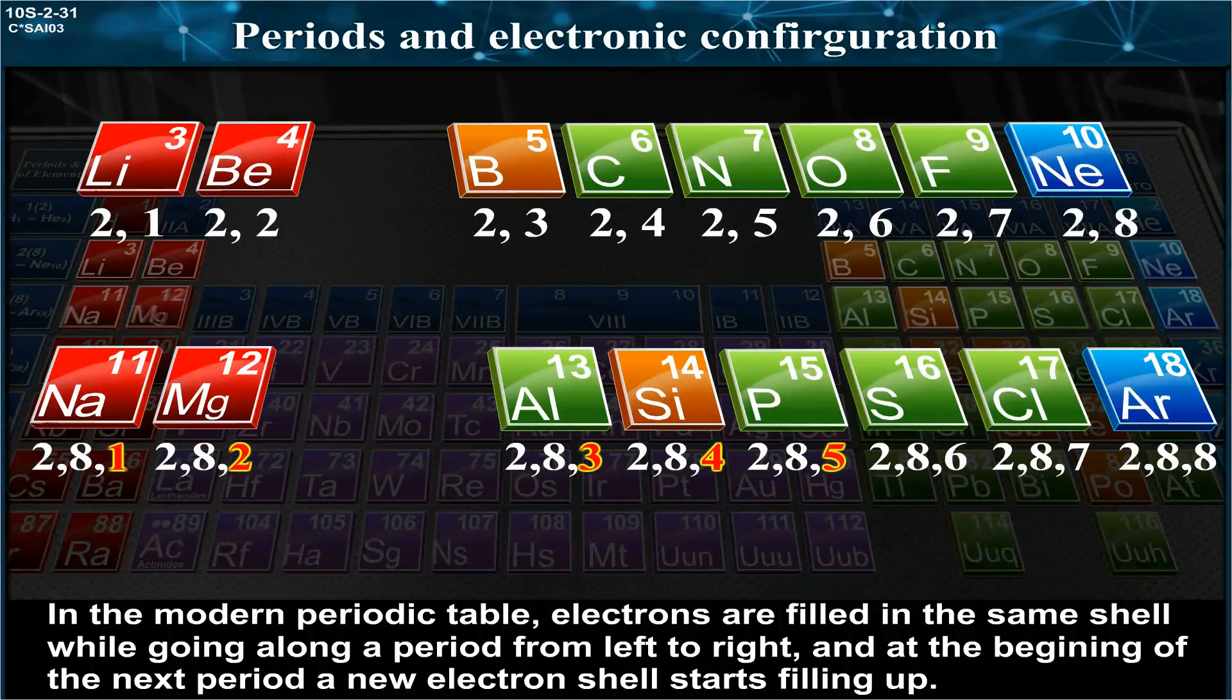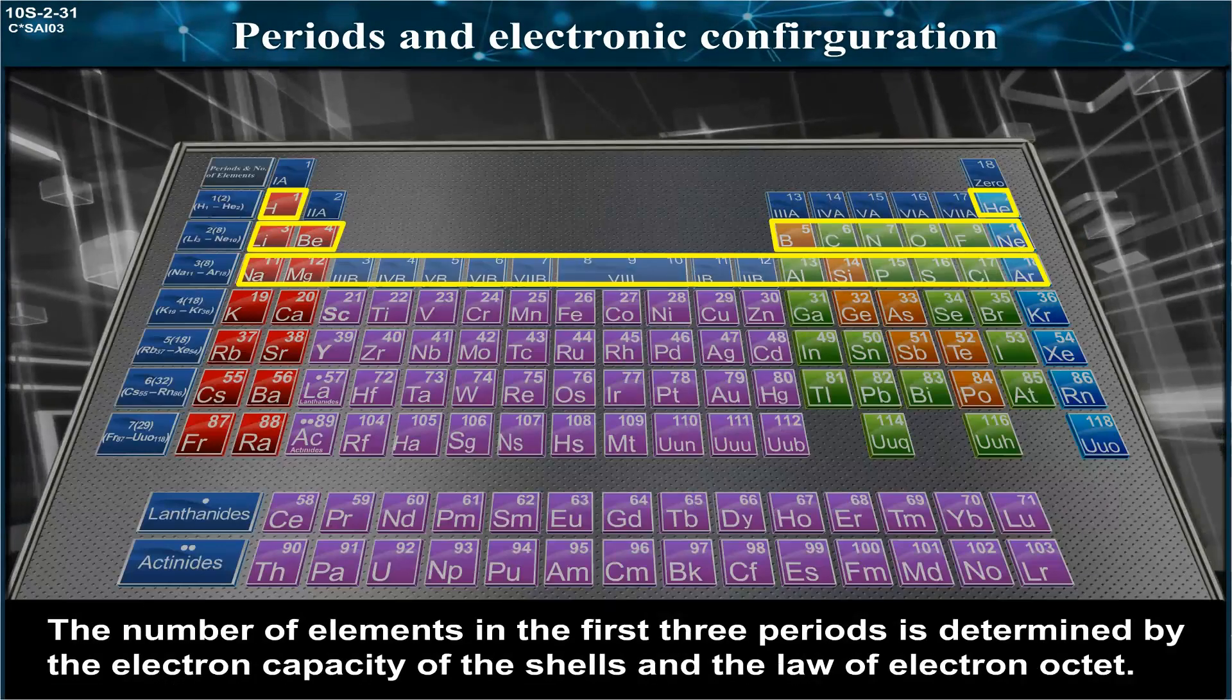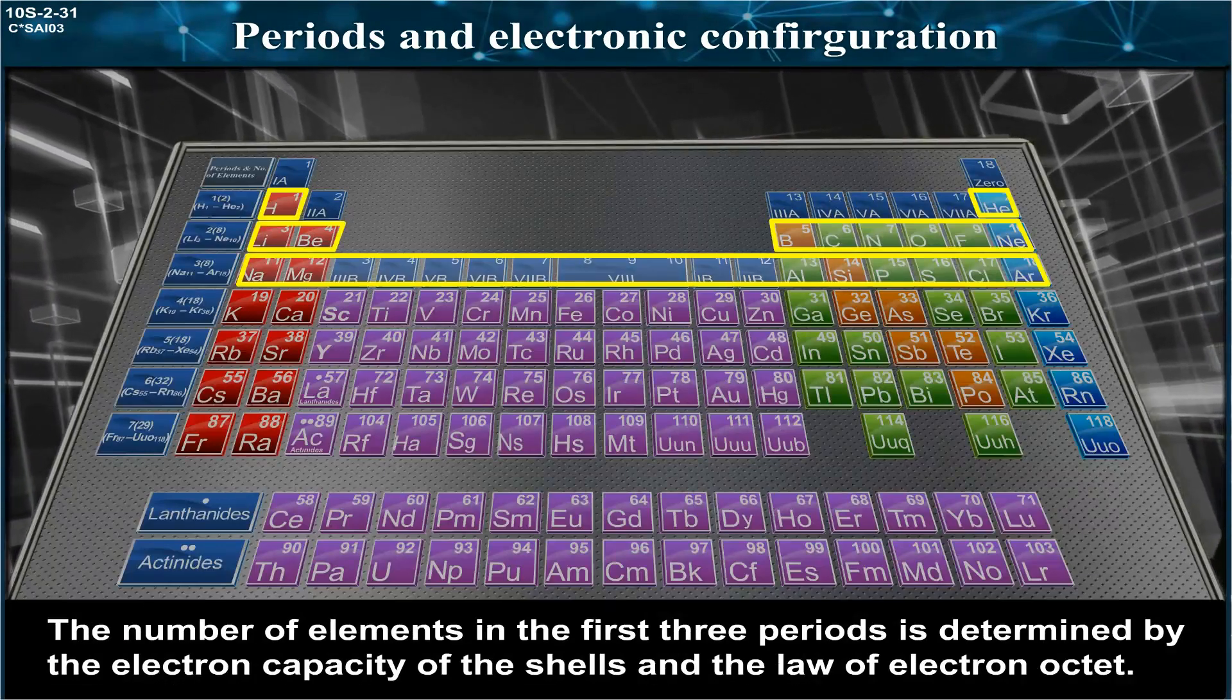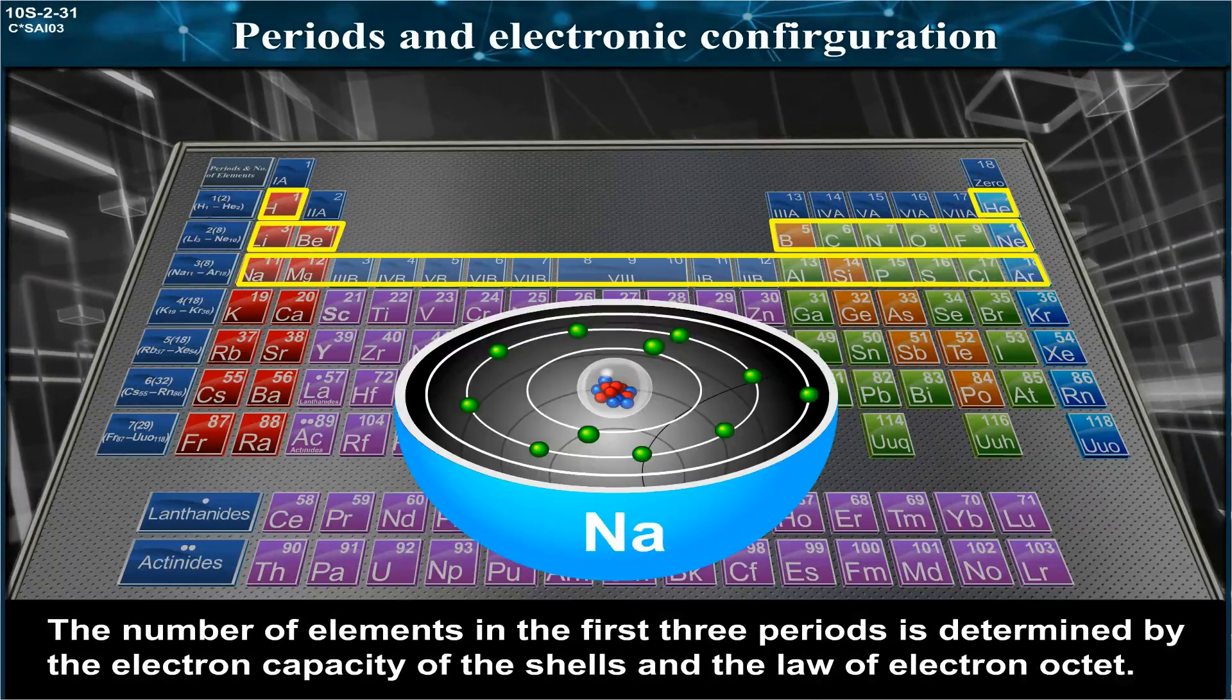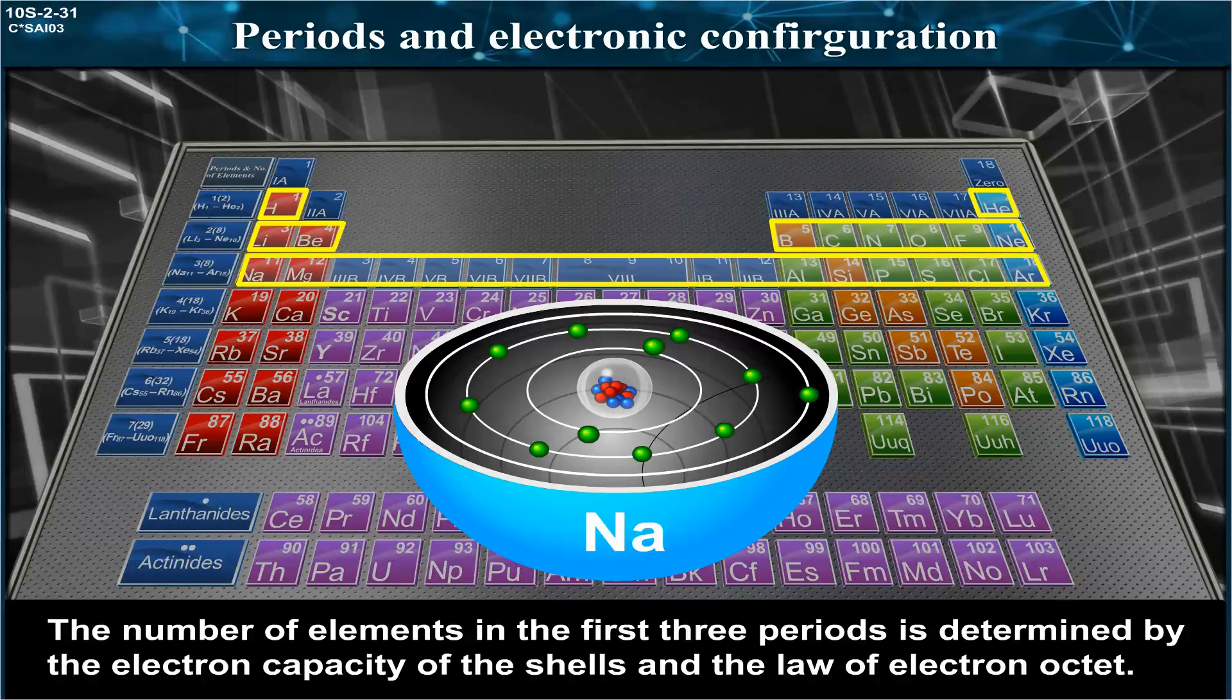From left to right, and at the beginning of the next period, a new electron shell starts filling up. The number of elements in the first three periods is determined by the electron capacity of the shells and the law of electron octet.